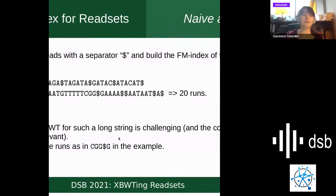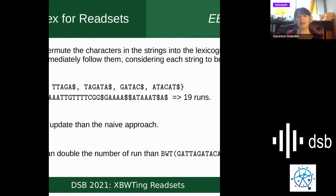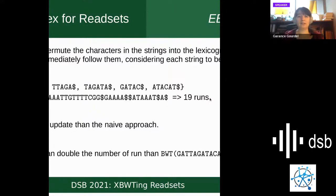There is the EBWT — the Extended BWT — where you permute all the strings into the lexicographic order of the suffixes that immediately follow them, considering each string to be cyclic. Taking the same example reads, we get an Extended BWT with 19 runs. The good thing with this approach is that, because we consider each string to be cyclic, it's easier to build and update than the naive approach. But the problem is that all those reads are taken from the original string, and the number of runs in the EBWT is more than twice the number of runs we originally had, which was eight.